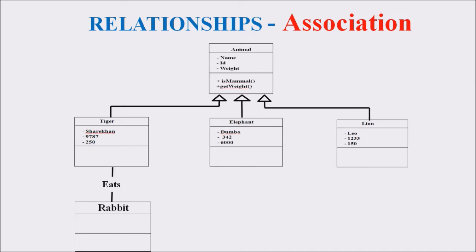This association is read from top to bottom or from left to right. This order is important because we must read it as Tiger eats Rabbit, not in the reverse order.